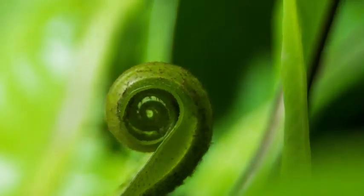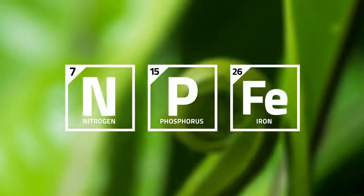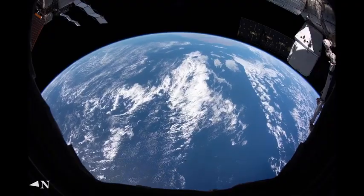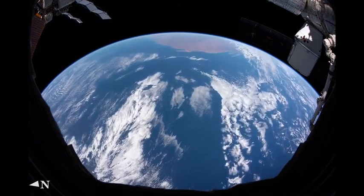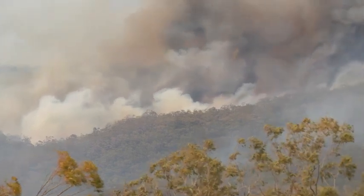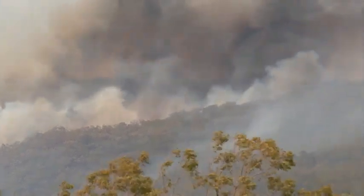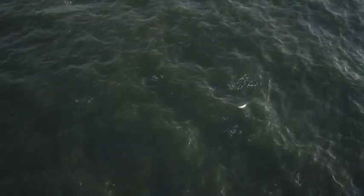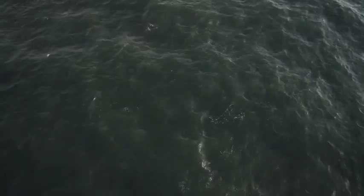Photosynthesis also requires nutrients such as nitrogen, phosphorus, and iron. Without the right proportions of these nutrients, photosynthesis doesn't happen, which can be seen in the iron-limited parts of the ocean, such as far offshore of Australia. Atmospheric aerosols released by fires, however, contain carbon as well as other nutrients essential for plant growth, like iron. When these aerosols are deposited on the ocean surface, these nutrients become available for photosynthesis.